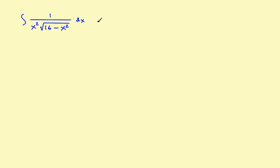This is going to be the second of the trig substitution videos. In the first video, we looked at the problem where we just had 1 over a square root. The big difference in this problem is that now we're going to add an x squared, so some additional x's, and we'll see what kind of effect that has on the problem. I would definitely recommend watching the first video — it'll show you how the steps were set up.